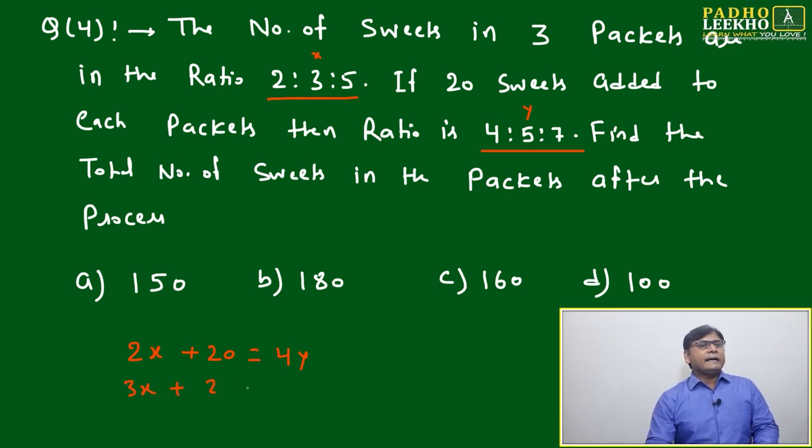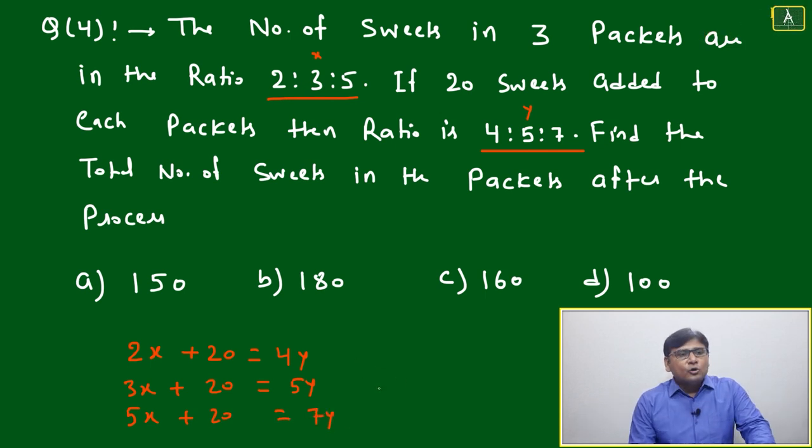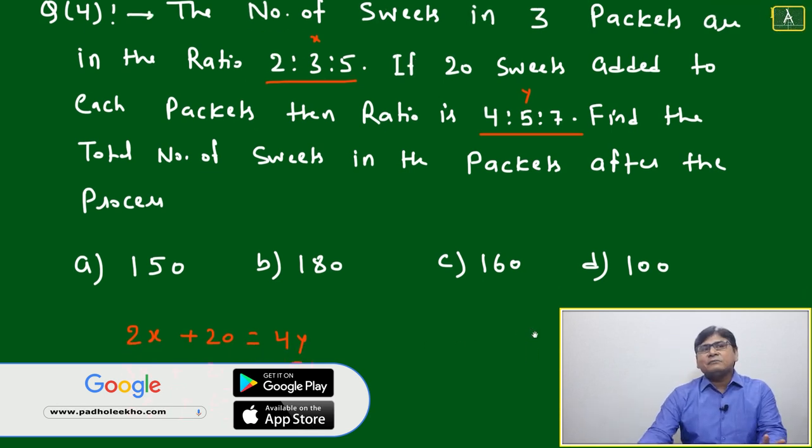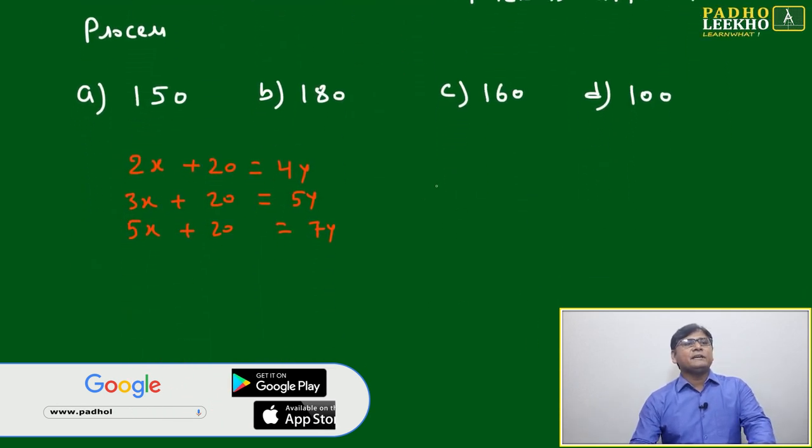Same thing we can write: 3x plus 20 suits added will become 5y, and 5x plus 20 will equal 7y. We can solve these three equations and we will be able to get whatever we want. But can we save time? Can we think in some other way?